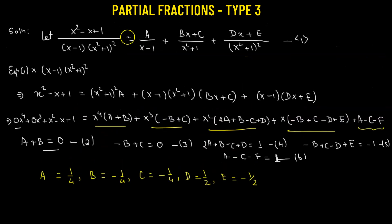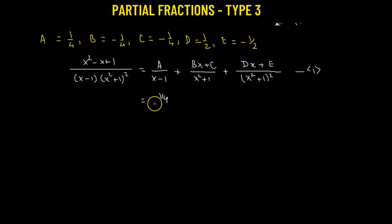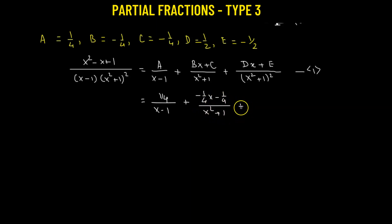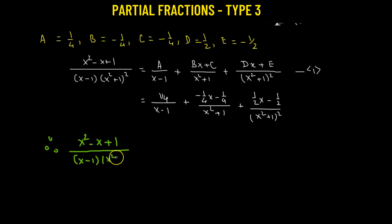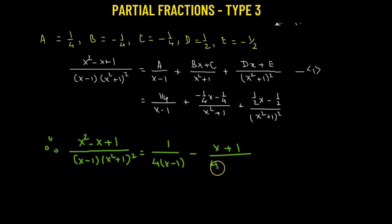Substituting these values back into equation 1, we get the final partial fraction decomposition: x squared minus x plus 1, divided by x minus 1 times x squared plus 1 whole squared, equals 1 over 4(x minus 1), plus negative x plus 1 over 4(x squared plus 1), plus x minus 1 over 2(x squared plus 1) whole squared.